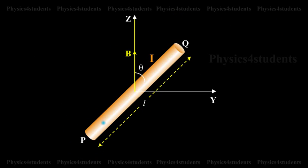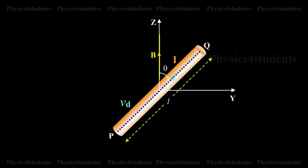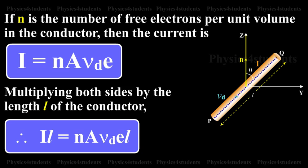Hence, the electrons drift along QP with drift velocity v_d. If n is the number of free electrons per unit volume in the conductor, then the current is I = nAv_de. Multiplying both sides by the length L of the conductor, IL = nAv_deL.